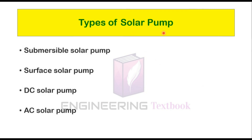Solar pumps have many different types, but the most major types are submersible solar pump, surface solar pump, DC solar pump, and AC solar pump. Let's see all four types of solar pumps in detail.